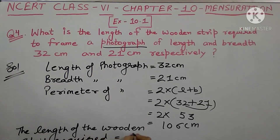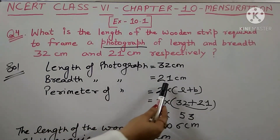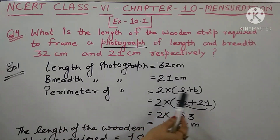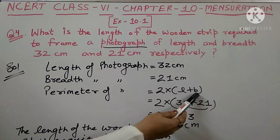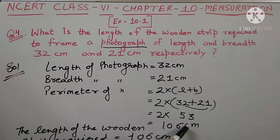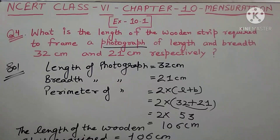We have added length and breadth: 32 plus 21 equals 53. Then 53 multiplied by 2 equals 106 centimeters. So the length of the wooden strip required to make the frame for this photograph is 106 centimeters.